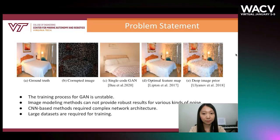Given the corrupted image as input, the first method is to use GAN to learn the image prior from an external database. We can see that the inpainting results suffer from unstable training. The second method estimates the image prior by fitting the network itself to the observation, which lacks generalization for different types of noise. The proposed work focuses on eliminating such defects.